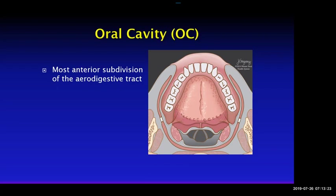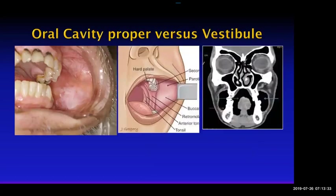So what is the oral cavity? The oral cavity is the most anterior subdivision of the aerodigestive tract. Some people divide the oral cavity into an oral cavity proper versus the vestibule. The oral cavity proper is the central part, and the vestibule is when you puff your cheek out — that part that sticks out. You can kind of see the vestibule on this patient.